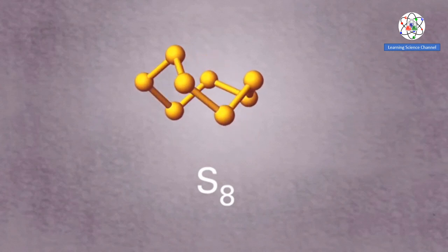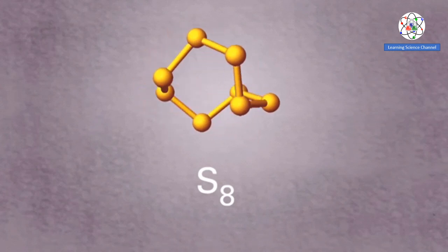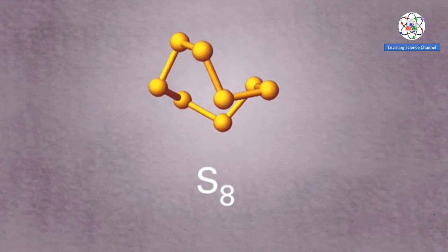Sulfur also exists as many allotropes. The one that you're most likely familiar with is S8, octosulfur, a bright yellow solid. In this allotrope, eight sulfur atoms are covalently linked to one another to form such a structure.